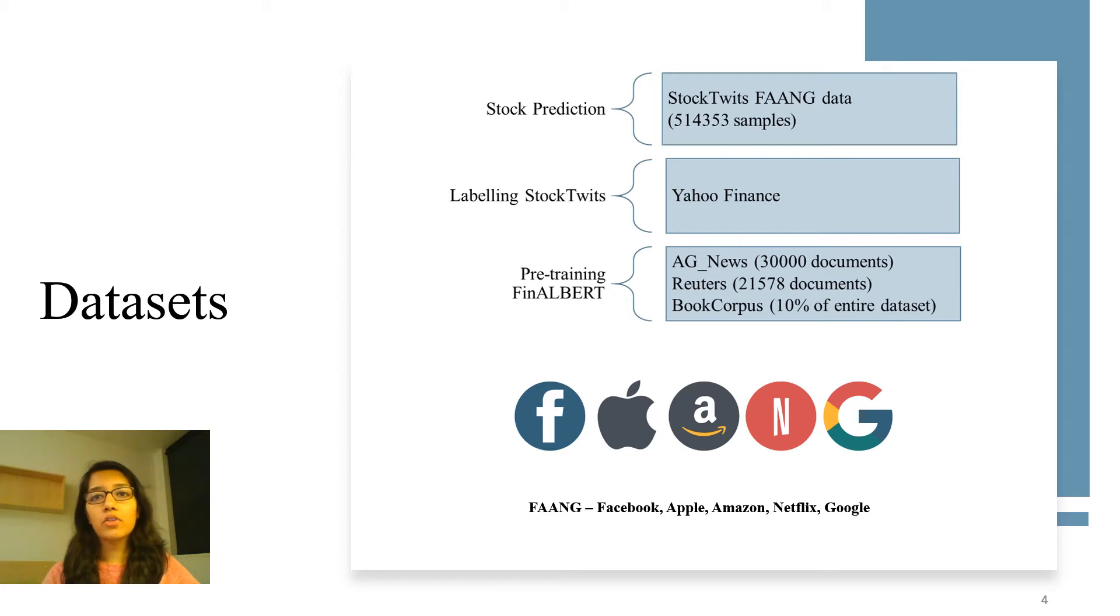For pre-training our proposed new model three data sets are used: Reuters, AG News and Book Corpus. Reuters is a benchmark data set used for text classification and consists of a total of 21,579 documents. AG News is a collection of news articles for different categories out of which we selected the articles related to business. And Book Corpus is a collection of text taken from Wikipedia. For our project we have used 10 percent of this data set.